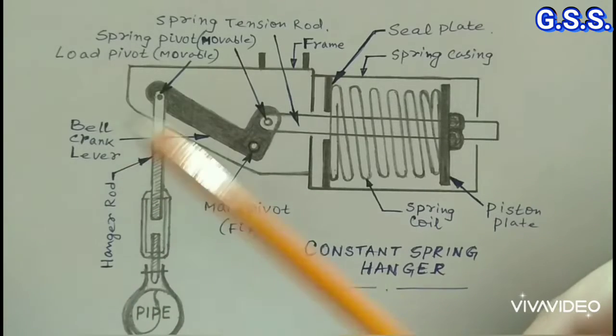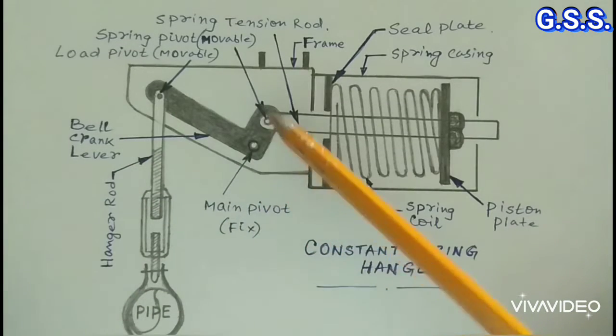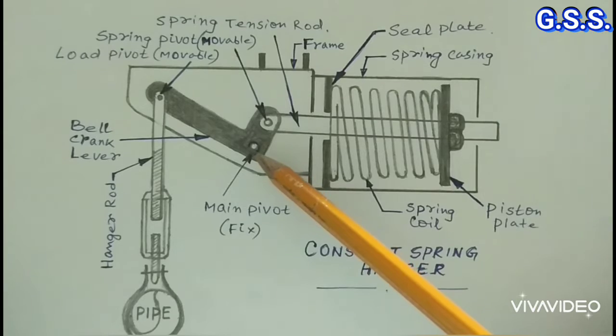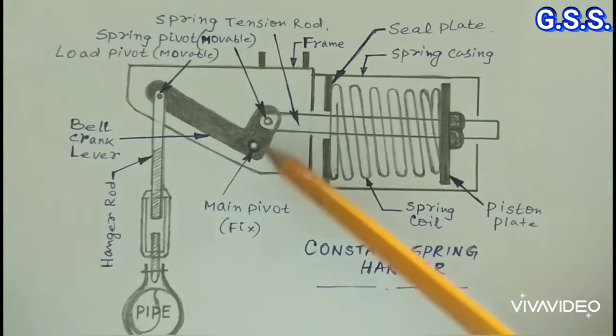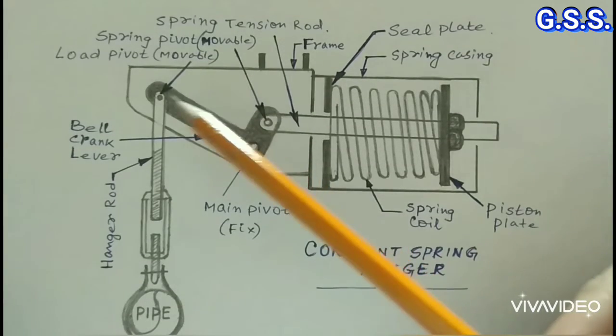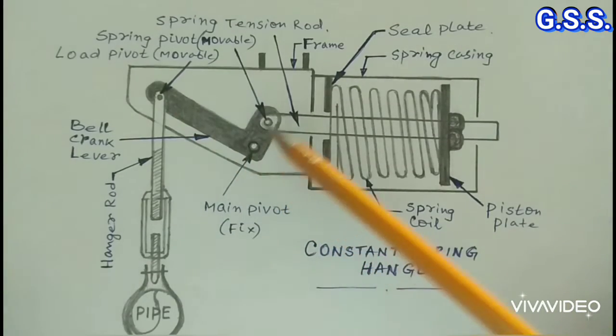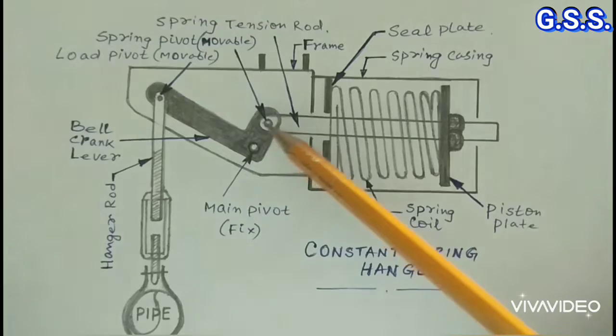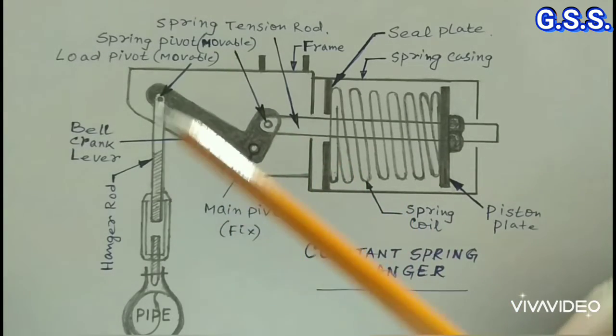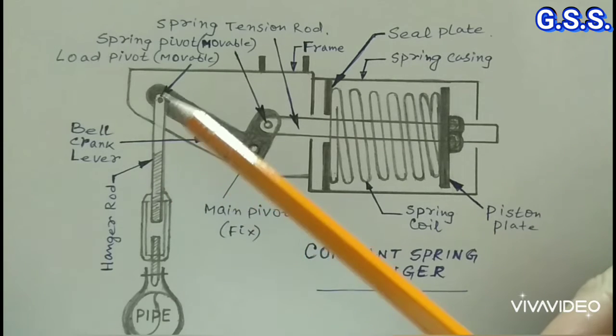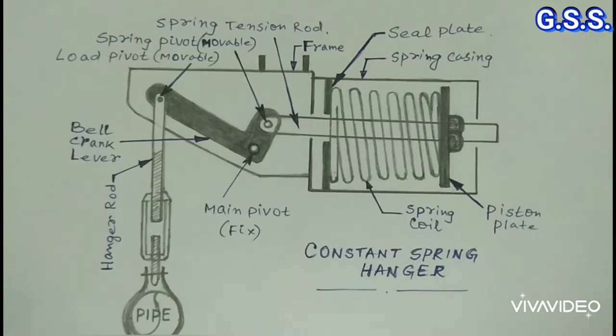The bell crank lever can rotate with respect to a fixed main pivot point. The shape of the bell crank lever is V-shaped, having one arm smaller and the other arm longer. A small horizontal displacement of the spring pivot point gives a huge vertical movement of the load pivot point from where the pipe is supported or suspended.